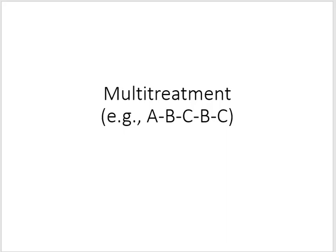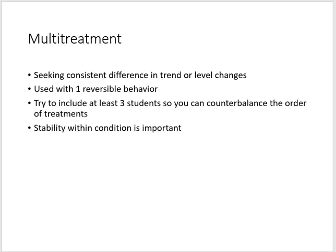The multi-treatment design — for example, an A, B, C, B, C design — seeks consistent differences in trend or level changes and is used with only one reversible behavior. You want to try to include at least three students so that you can counterbalance as a way of guarding against threats to internal validity.